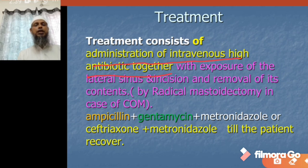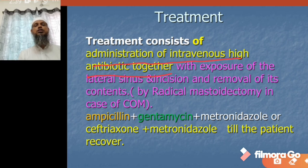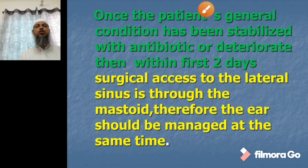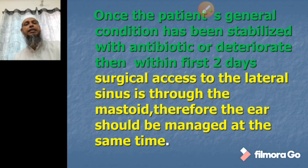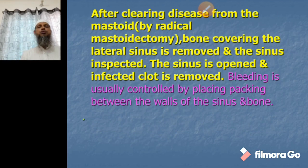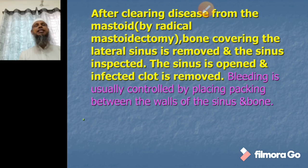If it is due to acute otitis media, cortical mastoidectomy is needed. The antibiotic combination is ampicillin, gentamicin, and metronidazole until the patient recovers. Once the patient's general condition has been stabilized with antibiotics, or if it deteriorates, within the first two days surgical access to the lateral sinus is through the mastoid — the ear should be managed at the same time. Disease is cleared from the mastoid by radical mastoidectomy, the bone covering the lateral sinus is removed, the sinus is inspected and opened, and the infected clot is removed. Bleeding is usually controlled by placing packing between the walls of the sinus and the bone.